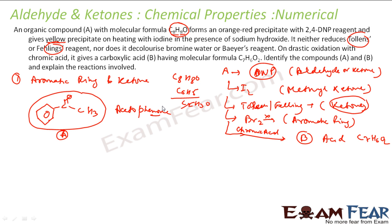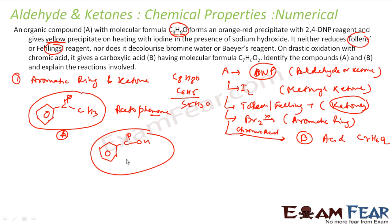Since A is acetophenone, we can easily find compound B. When acetophenone undergoes drastic oxidation with chromic acid, the methyl ketone side is oxidized and it becomes benzoic acid. Confirming the formula: benzoic acid is C7H6O2 — seven carbons, six hydrogens, two oxygens. That matches, so B is benzoic acid.